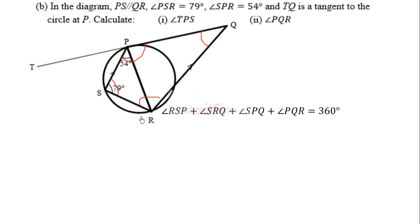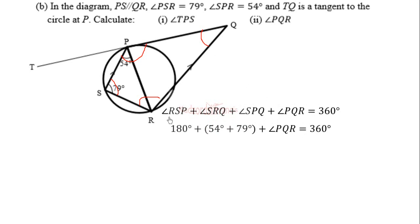In the quadrilateral, angles RSP, SRQ, SPQ, and PQR must add up to 360 degrees. Importantly, angle RSP plus angle SRQ must equal 180 degrees, because they are co-interior angles formed by the parallel lines SP and RQ. Co-interior angles always add up to 180 degrees.